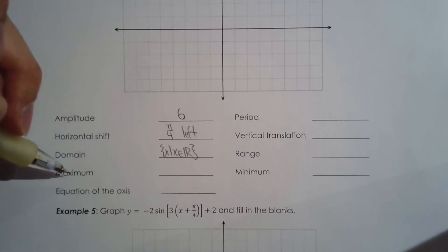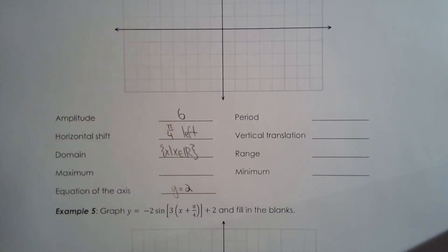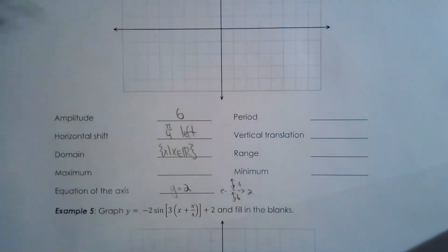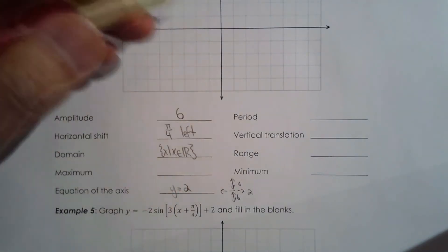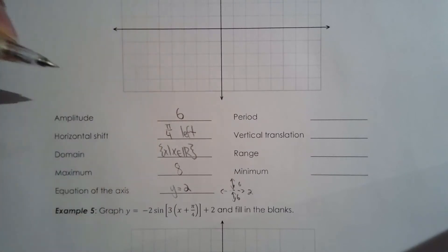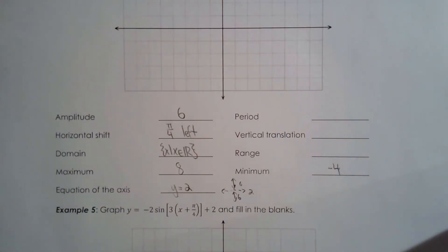The maximum value depends on the equation of the axis, which is y equals two. So if the middle is two and the amplitude is six, the maximum value is two plus six, which is eight. The minimum value is two minus six, which is negative four.